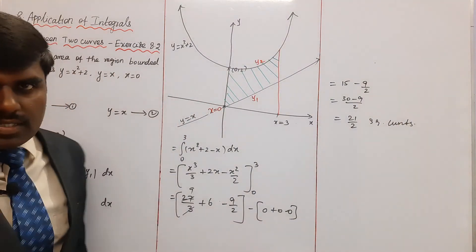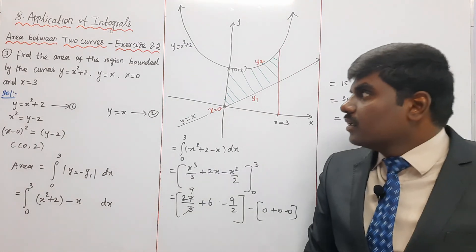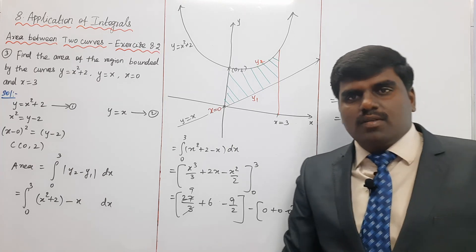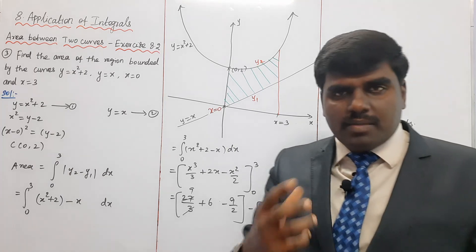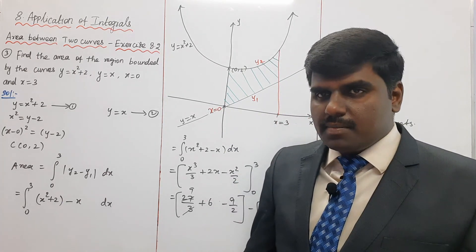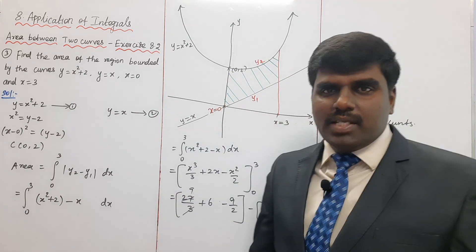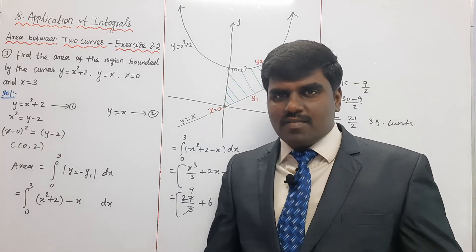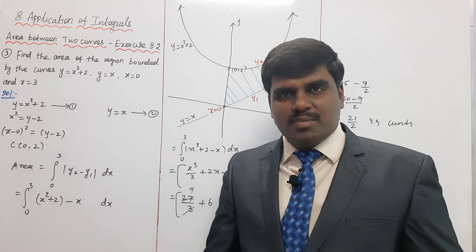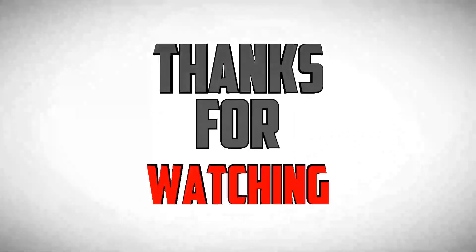So the answer is 21/2 square units. Exercise 8.2 Question 3 is now completed. You can watch Question 4 next, which is also a very important question. All 6 questions in this exercise are important for your board examination. Thank you.